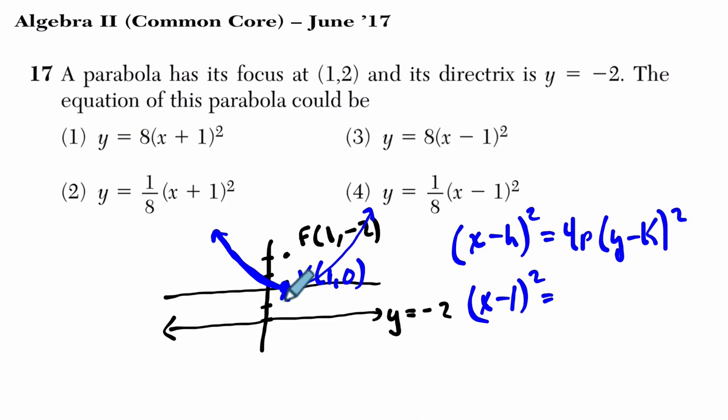In other words, if you looked at between the vertex and directrix, you'd say the absolute value of p is just 2. But you plug 2 here because it opens upward.